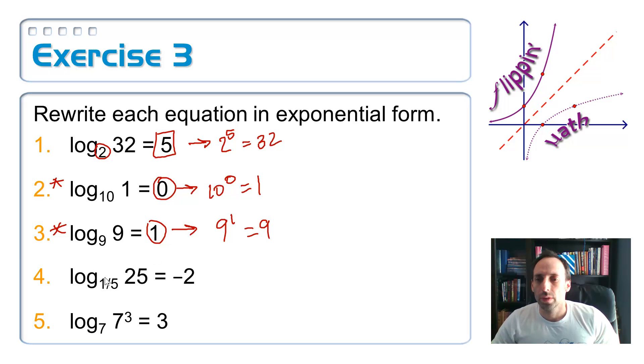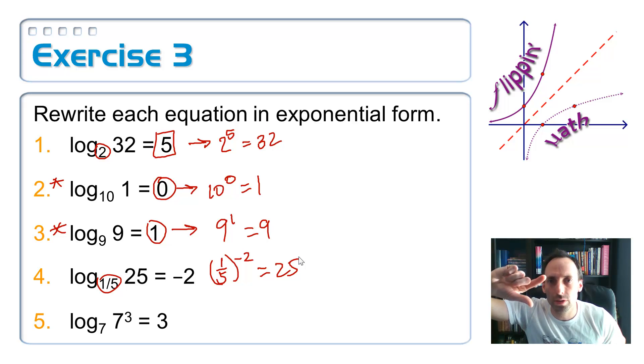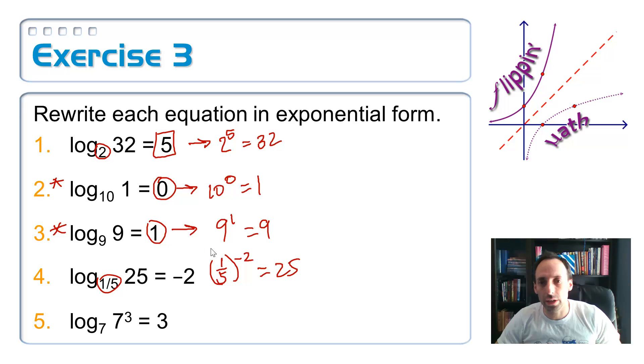Number 4, the base is 1/5. 1/5 to the negative 2 power is equal to 25. See if that makes sense. The negative power flips it, so that becomes 5. And then 5 squared is 25. So it makes sense. And then finally, the base is 7. So 7 to the 3rd power is equal to 7 to the 3rd power. That makes sense. And this one will also be a property.